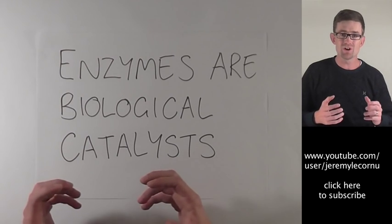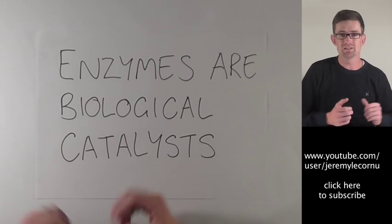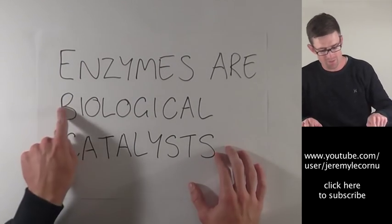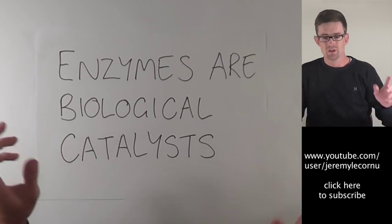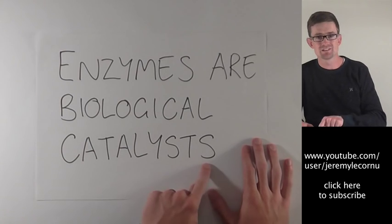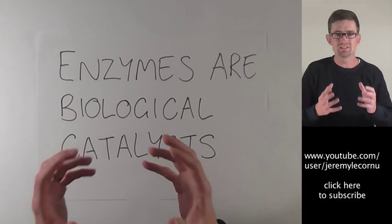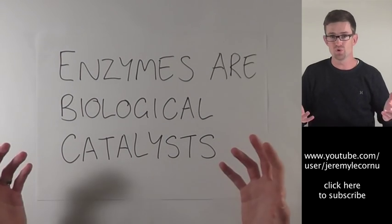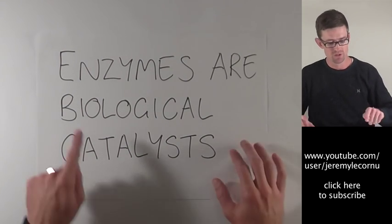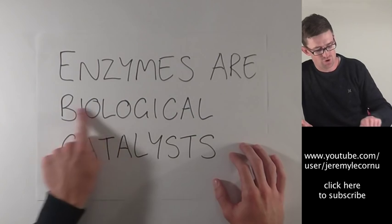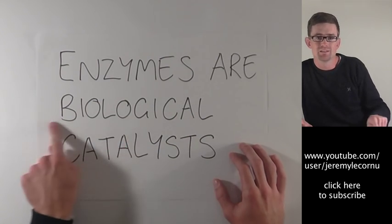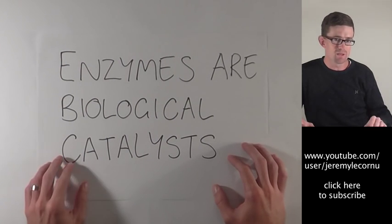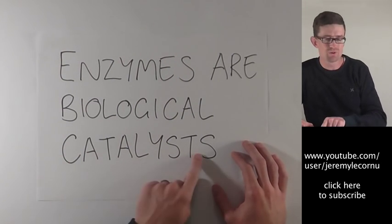Enzymes are made by cells. They're made in living things. And so we call them biological. Our other term is catalysts. A catalyst is something that speeds up a chemical reaction, which is of course exactly what enzymes do. So because enzymes are produced by living things, they are biological. And because enzymes speed up chemical reactions, they are called catalysts.